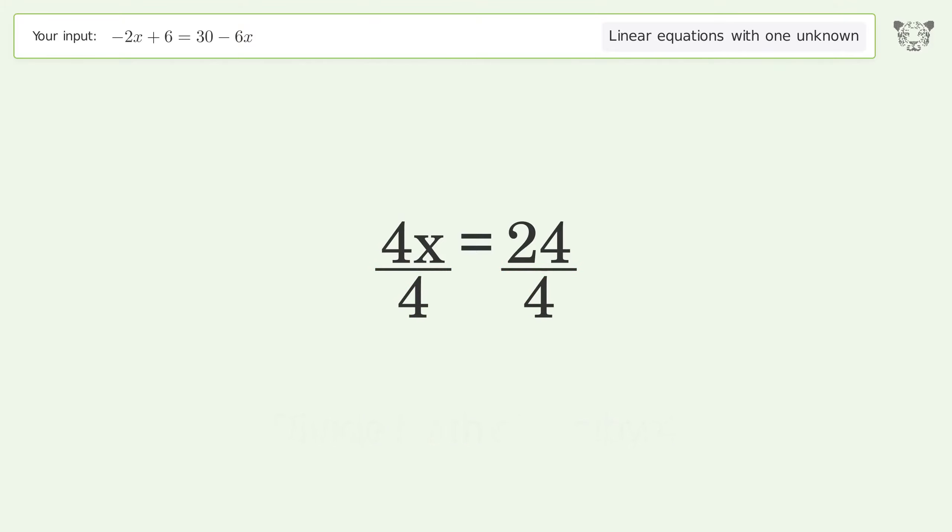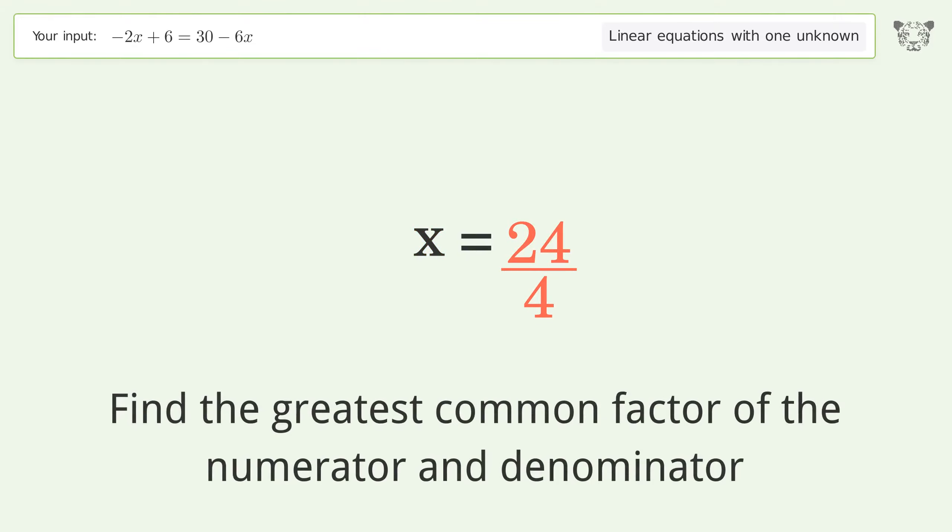Isolate the x. Divide both sides by 4. Simplify the fraction.